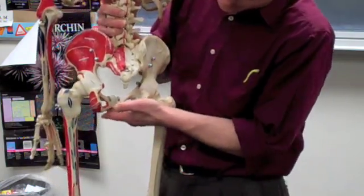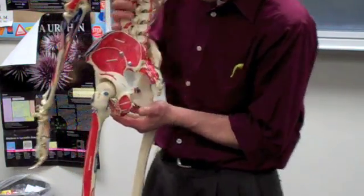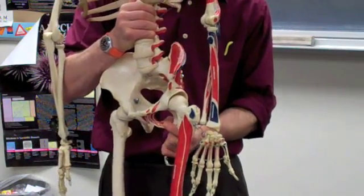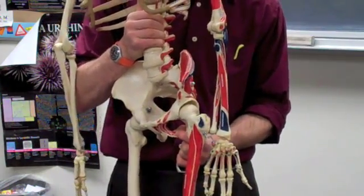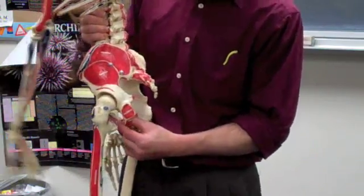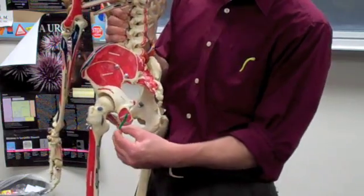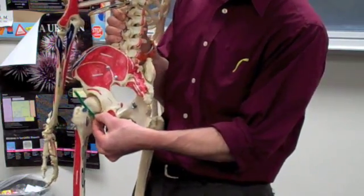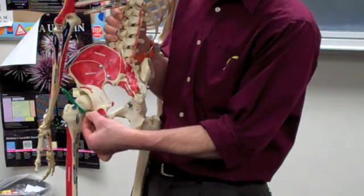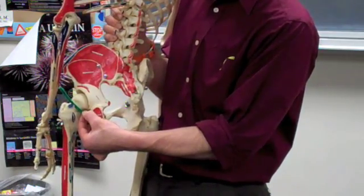The obturator externus originates essentially at the same place as the obturator internus but on the anterior portion of it. And then, it goes from the anterior portion and goes straight to the back of the femur and attaches into the greater trochanter.